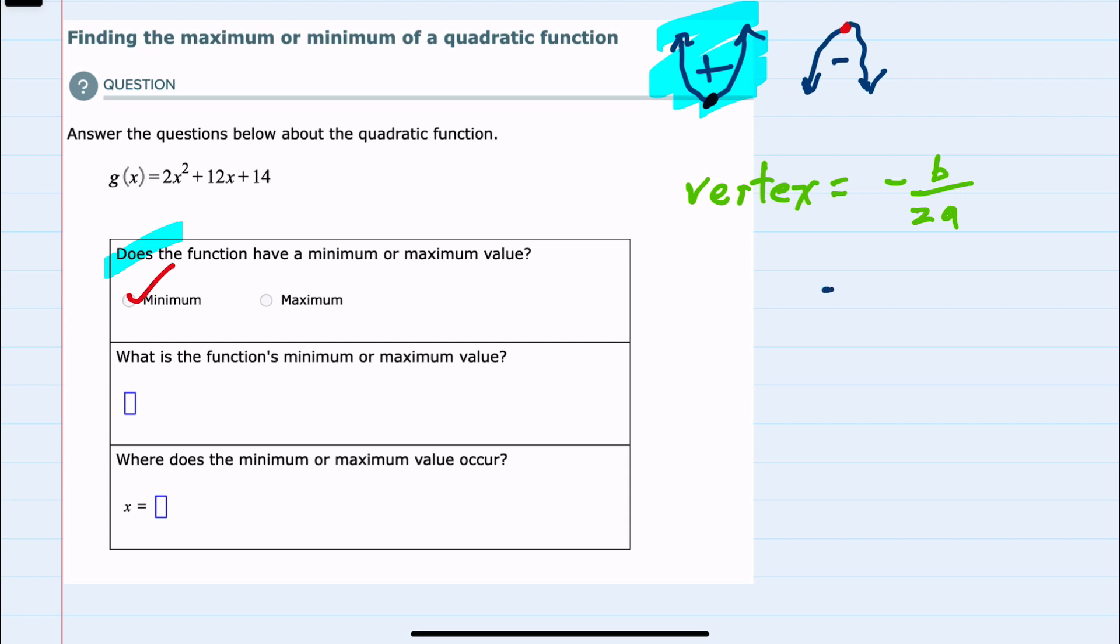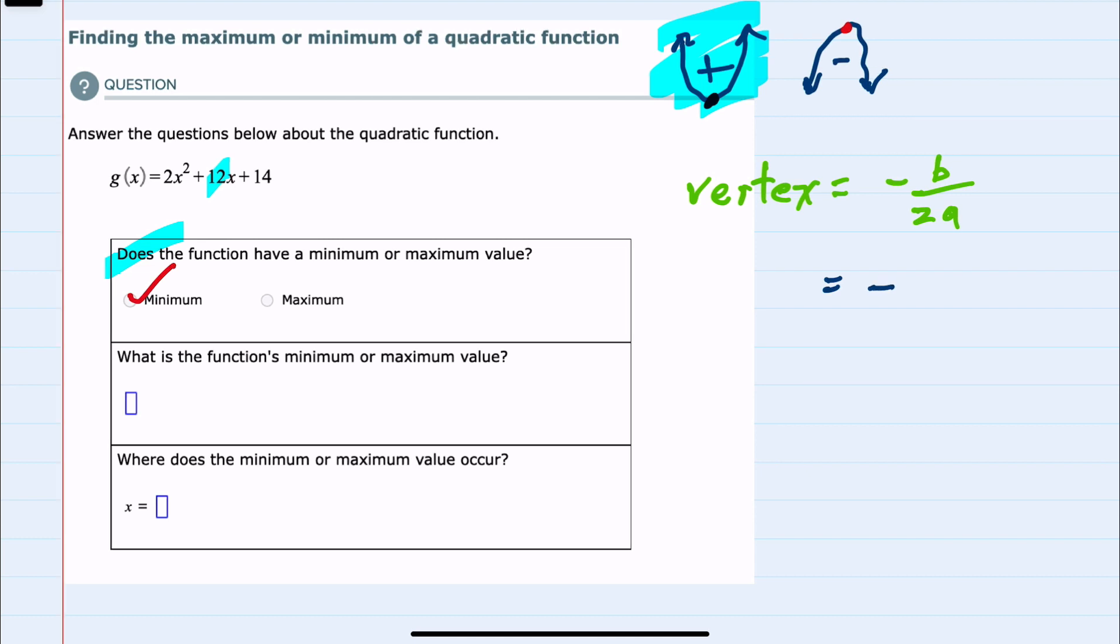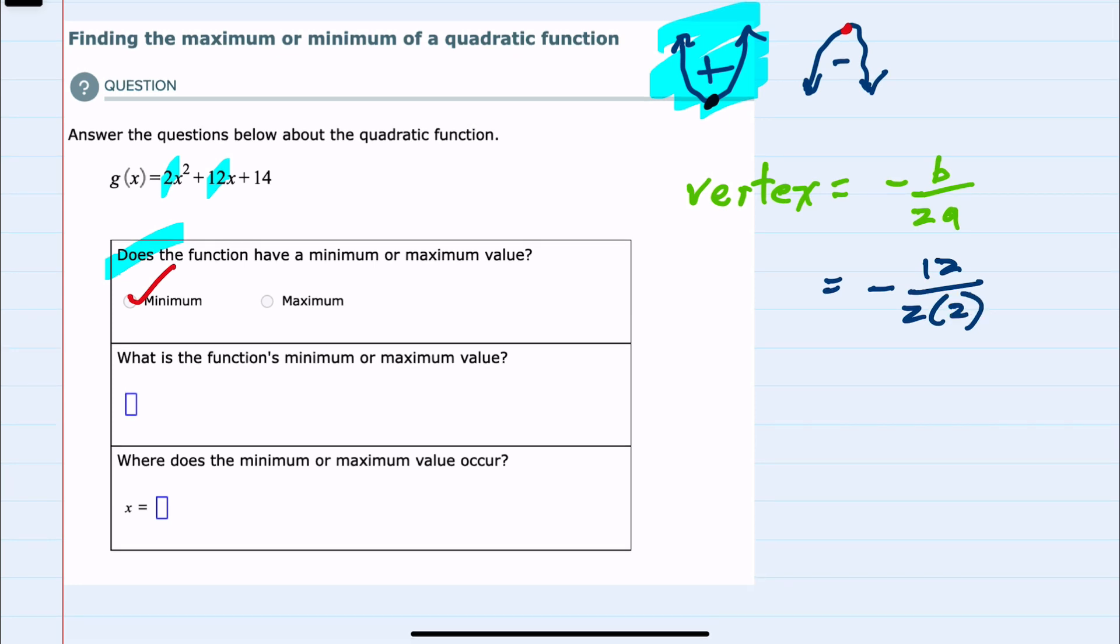We know that it happens at the vertex and that the vertex occurs at negative b over 2a. So for this quadratic, that vertex would occur at negative b, where b is the second coefficient—so negative 12—over 2 times a. And in this example, our a is the 2 that is the leading coefficient, so 2 times 2 in that denominator.